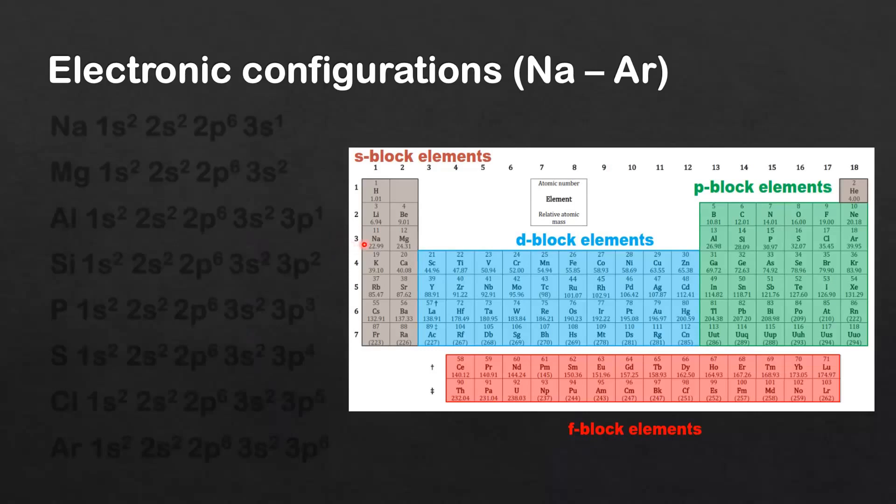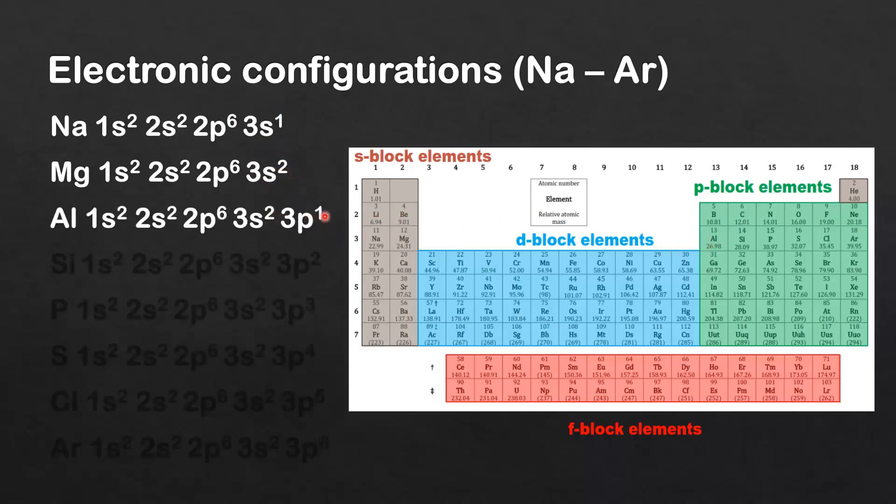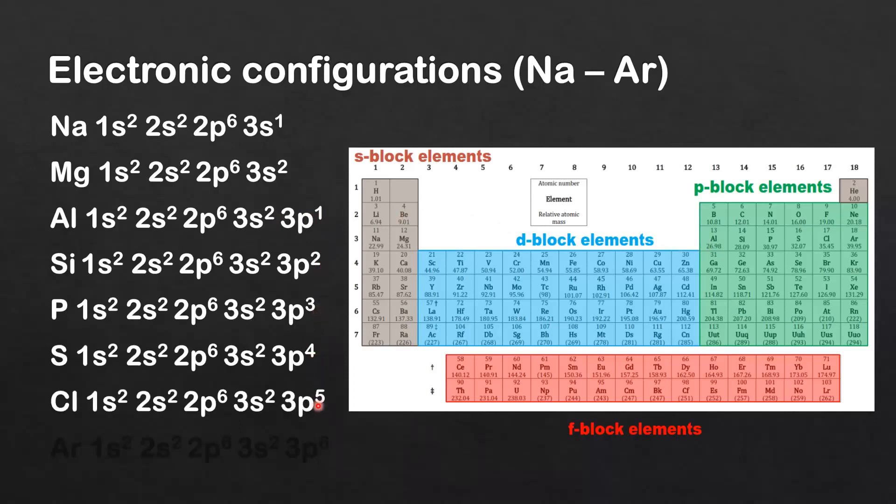Next we're into period 3. We'll start with sodium and magnesium; these are s-block elements because the valence electrons are filling the s sublevel. Then we move on to aluminium, which is a p-block element, and then silicon, phosphorus, sulfur, chlorine, and finally argon.